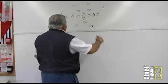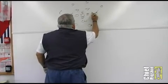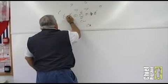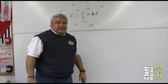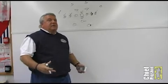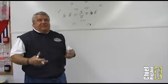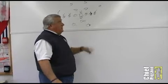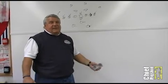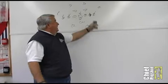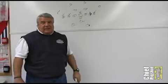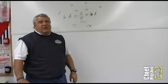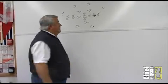We number our linemen, which is kind of rare. Our right side are even numbers. Our left side are odd. And we number them because it's easier for them to figure out what we're doing. Like if we call, we used to call it just outside X, which would mean our tackle and tight end would X block. Well, that got a little confusing. Now we call it 64.